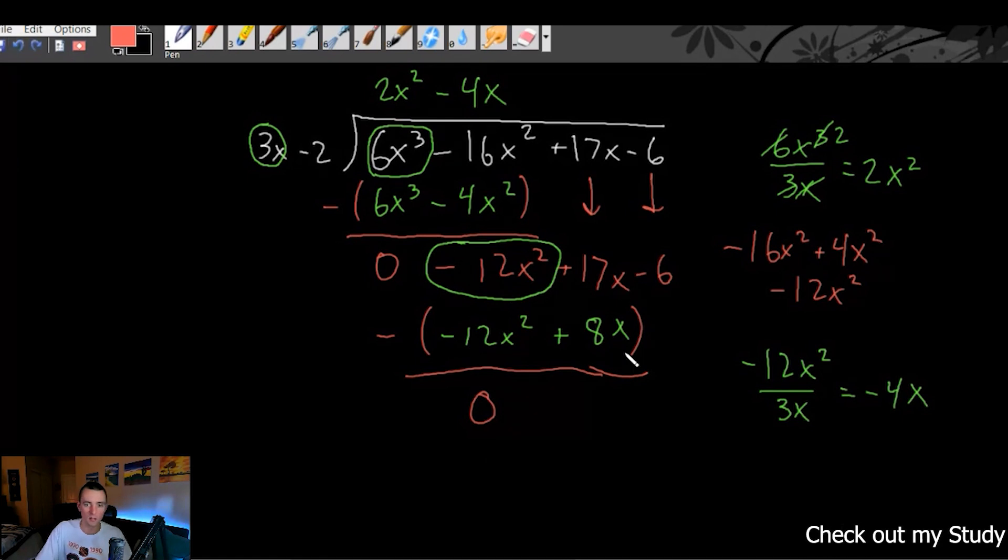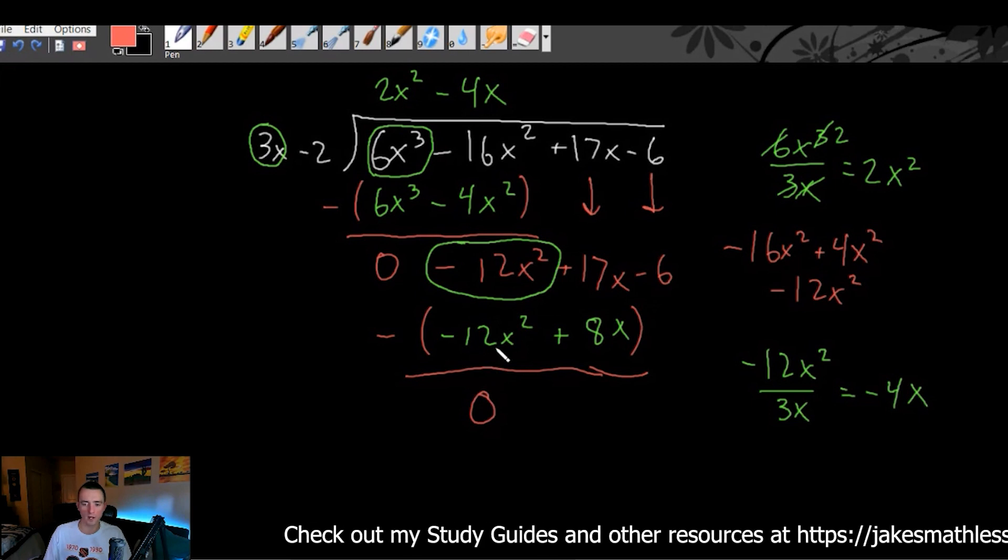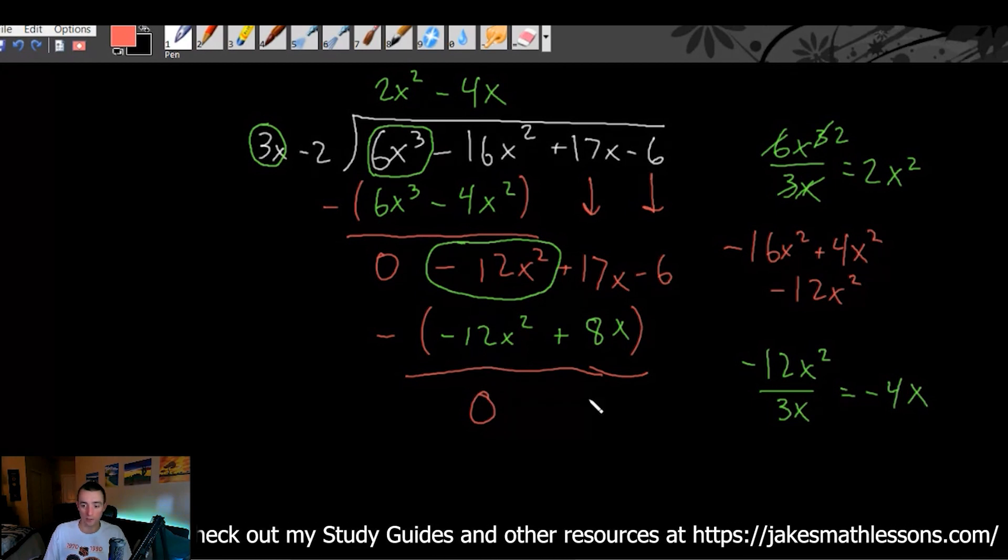It may end up going to 0 for some of these other ones as well. But the first one should be 0. Otherwise, you put the wrong number up here or the wrong term up here. So that's kind of a good way to kind of double check that we got at least this first term here, right?